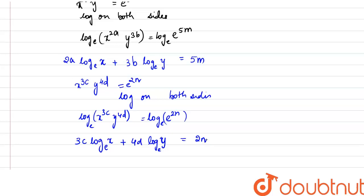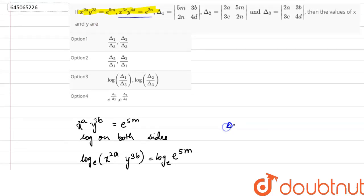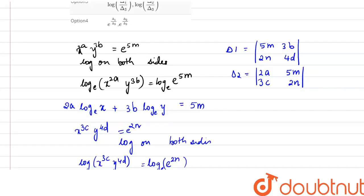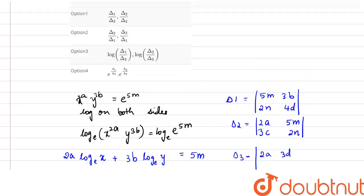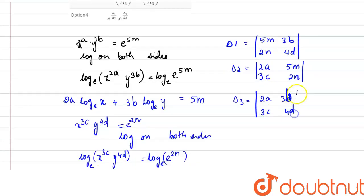Now let us set up the determinant equations. δ1 is the determinant with entries 5m, 3b, 2n, 4d. δ2 is the determinant with entries 2a, 5m, 3c, 2n. δ3 is the determinant with entries 2a, 3b, 3c, 4d.